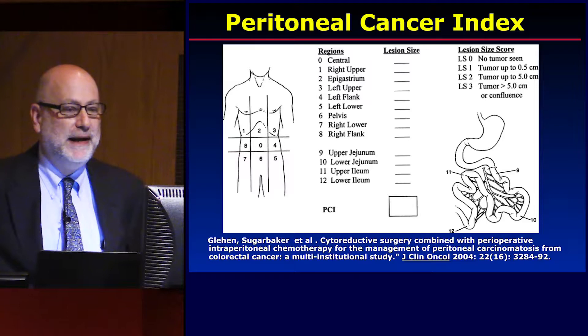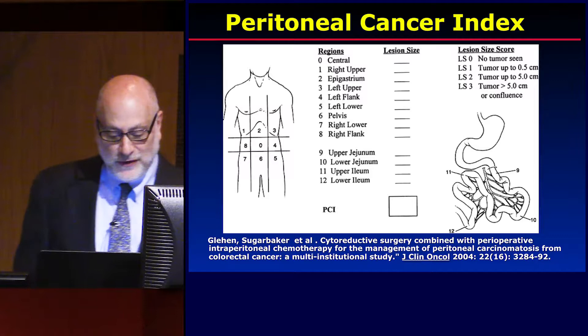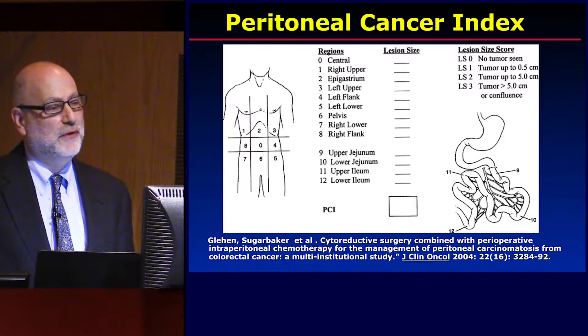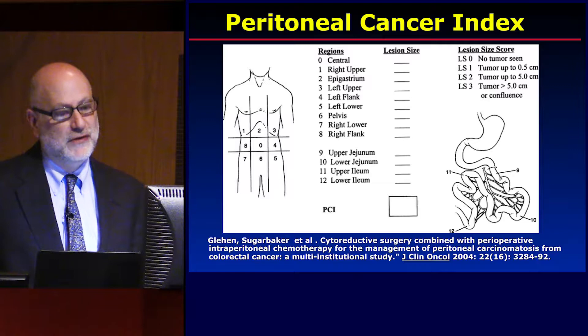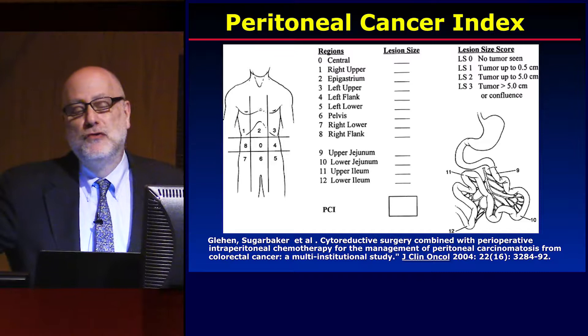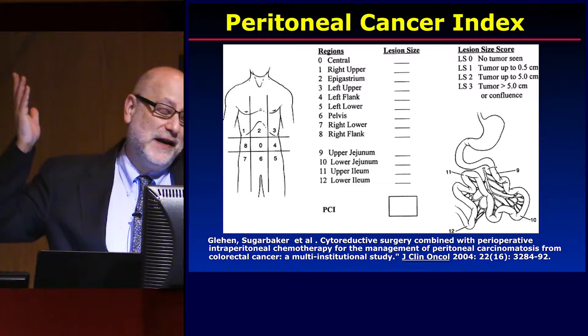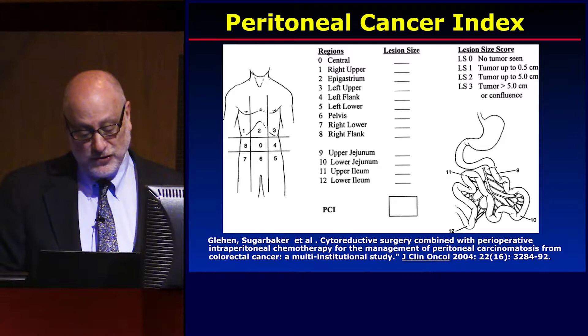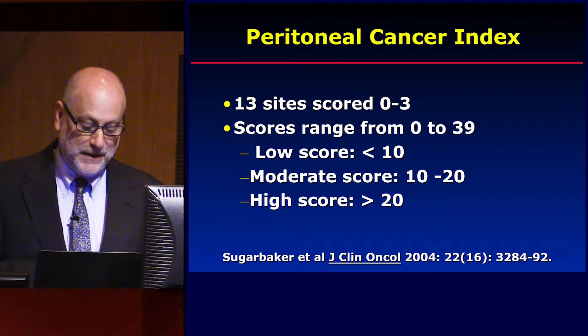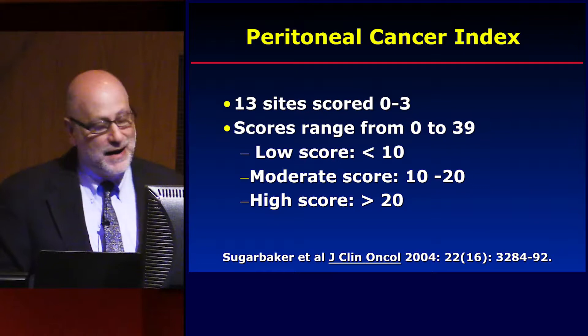Surgeons will ask me for the peritoneal cancer index. There are 13 areas we're obligated to look for, and the numbers go between zero and three across all 13 stations, so the peritoneal cancer index should vary between zero and 39. I just learned from Dr. Esquivel that greater than or less than 10 might divide patients into those who can get laparoscopic HIPEC versus those who will need an open procedure. What I used to consider is scores greater than 20 as high-volume tumor, versus less than 20.